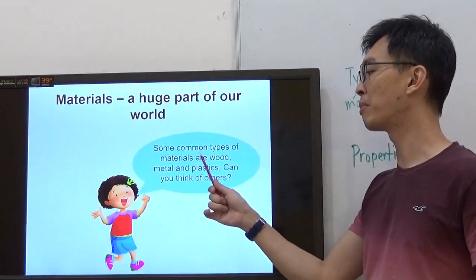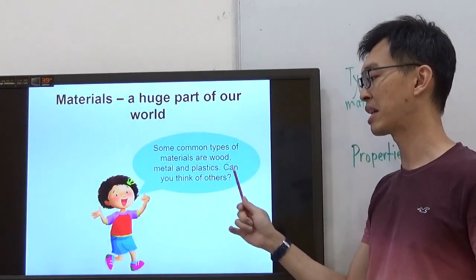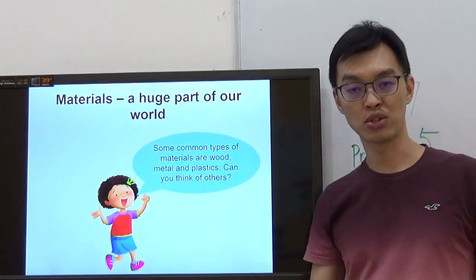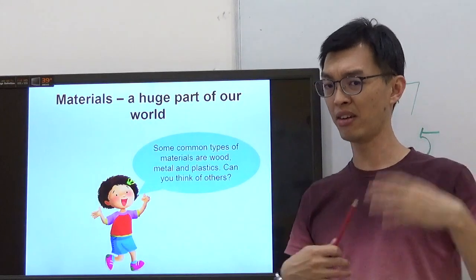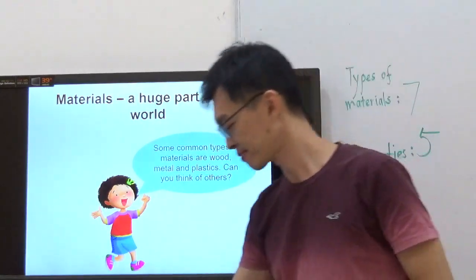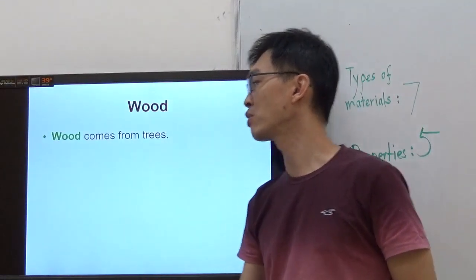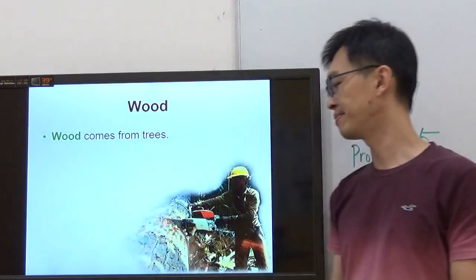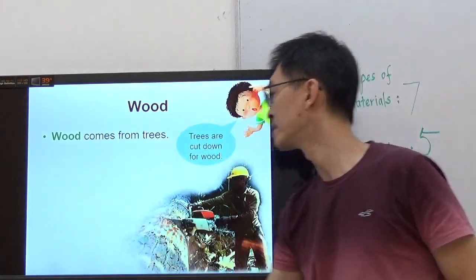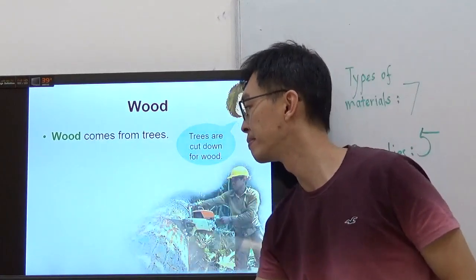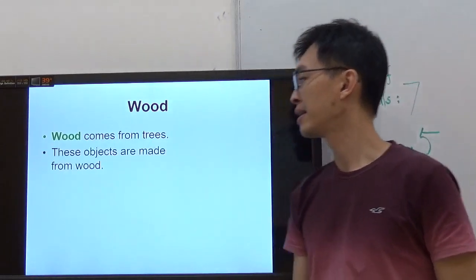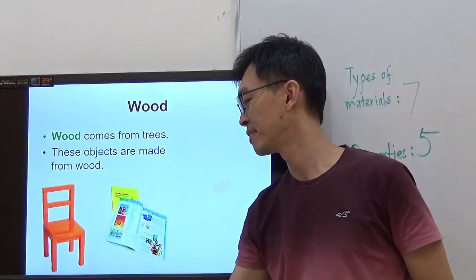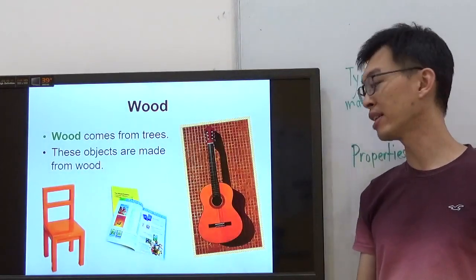Some common materials, some common types of materials are wood, metal, and plastic. Can you think of others? So I've told you three. We need a total of seven. So do you think you can think about another four without flipping the book? So let's talk about wood first. Wood obviously comes from trees. Trees are cut down for wood. These objects are made from wood. Chair, books, and even guitar right now.